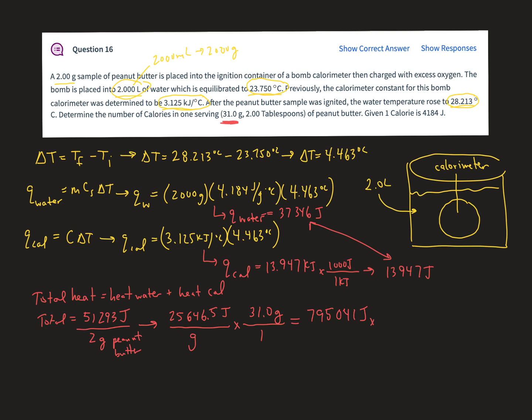The last thing is we want to find that in calories. Well, I know one food calorie, so capital C calories, is 4,184 joules. Divide that through, joules cancel out, and we get approximately 190 calories, or 1.90 e to the two calories.